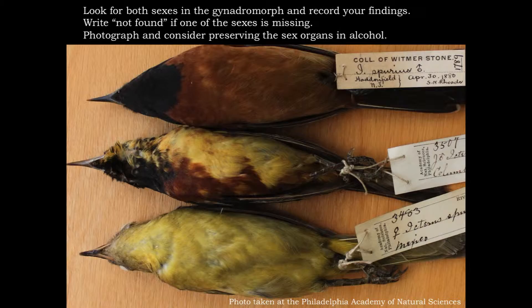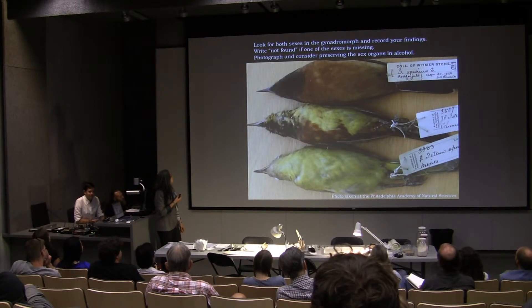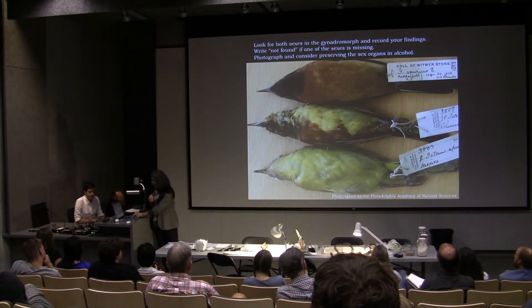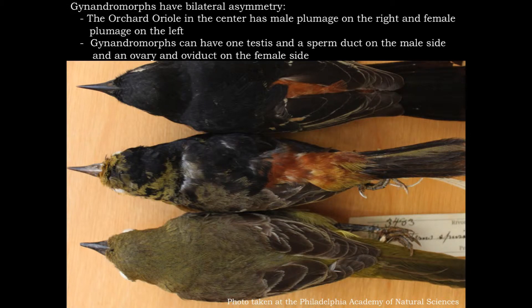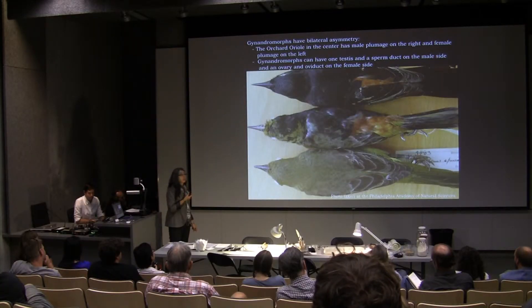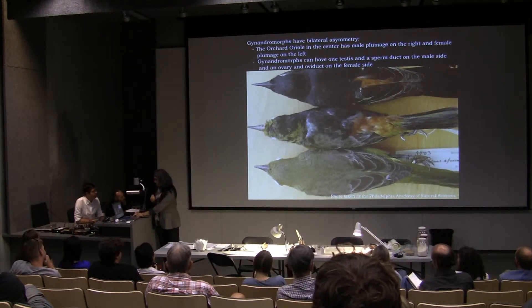If you ever find a gynandromorph and bring it to a curator in a museum, you'll have a friend for life. There are very few gynandromorphs. This particular one is at the Academy of Natural Sciences in Philadelphia, prepared by Ridgway himself around 1910 — it's just gorgeous. The PowerPoint reminds you what to look for: a testis and an ovary in the same bird. And if you're somewhere without a permit, please cut it open, look at it — it's amazing.